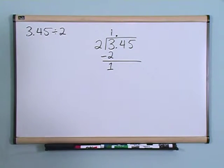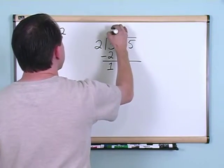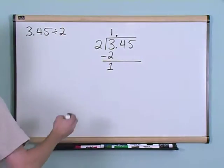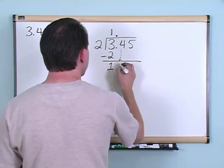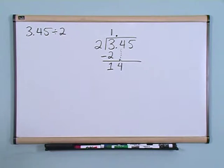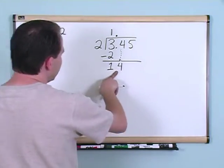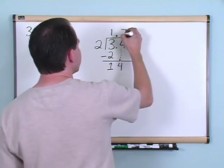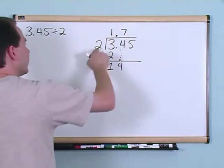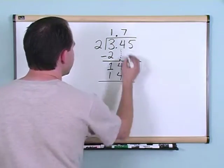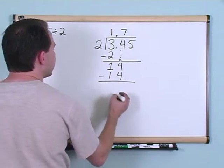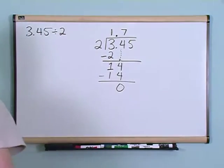And you ask yourself, can 2 go into 1? The answer is no, it really can't. But before we give up, we're going to take this 4 and drop it down and make it a 14. This is all exactly the same as what we've done when we divided numbers in the beginning of this class. Now the next question we ask is, can 2 go into 14? The answer is yes, it can go 7 times because 7 times 2 is 14. So you multiply, write that down, and subtract, and you're going to get a 0 because 14 minus 14 is 0.